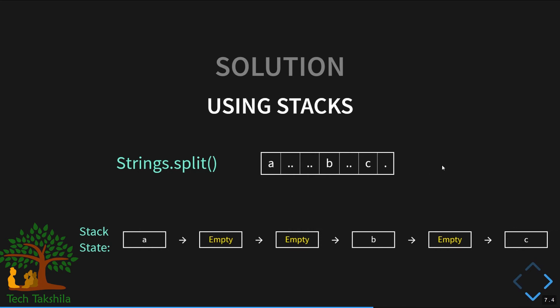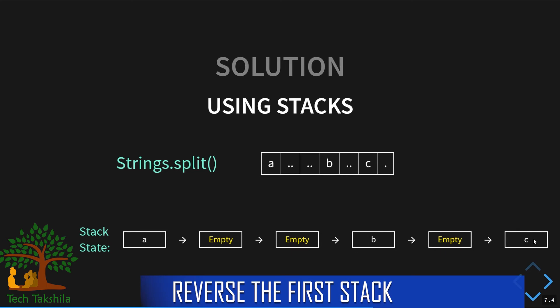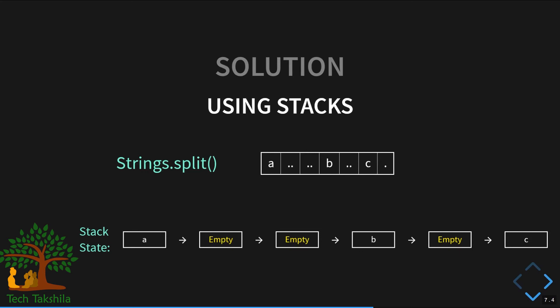After building the stack, some post-processing is needed. If more elements like D, E, F were present, popping them would give us F, E, D — the reverse of the correct order. So we reverse the remaining stack into another stack to ensure the topmost element is the parent of all lower elements, giving us the correct path order.